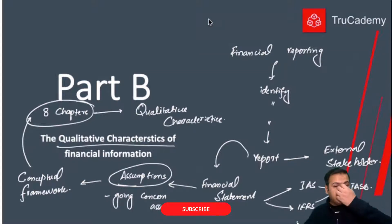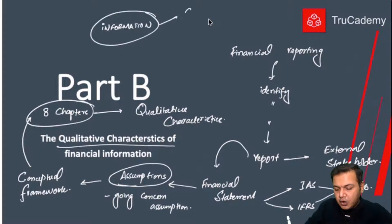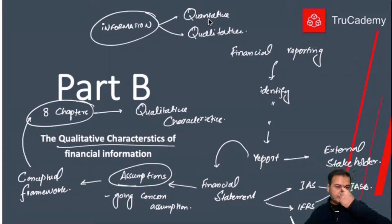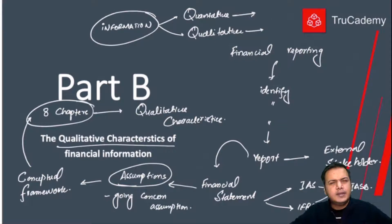Now, when we talk about information, as we discussed in M1 as well, information is of two kinds: one is quantitative and the other is qualitative. What is the difference between these two?